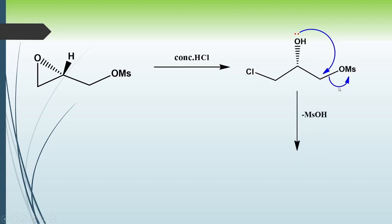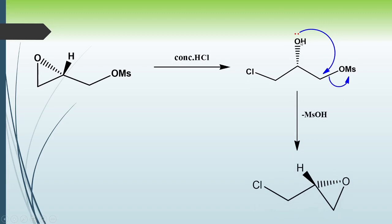In the next step there is removal of MsOH and we get our desired product — the epichlorohydrin — with formation of the epoxide ring. This is R-epichlorohydrin because by the priority order: oxygen is first priority, CH₂Cl is second, CH₂ is third, and hydrogen is fourth. The rotation 1→2→3 appears S, but since hydrogen is above the plane the absolute configuration is R.